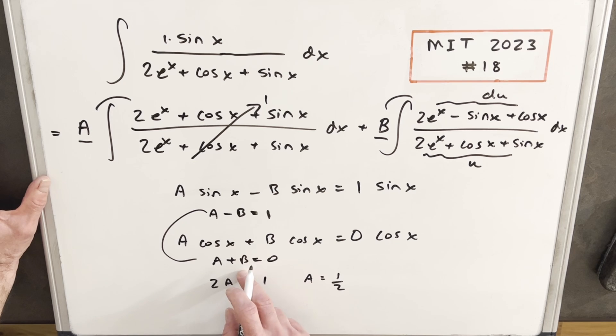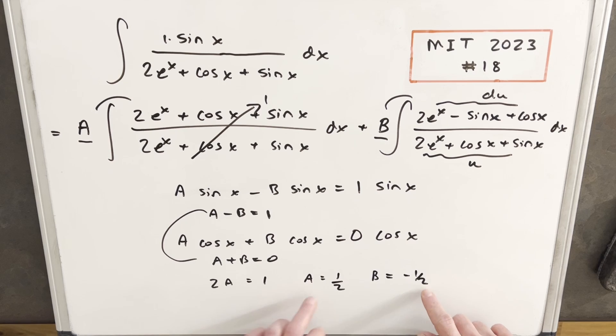But then we can plug in this a in this one, and then that means b is going to be minus 1 half. So let's just take our a and b and put it back with our integral and see if we can continue.